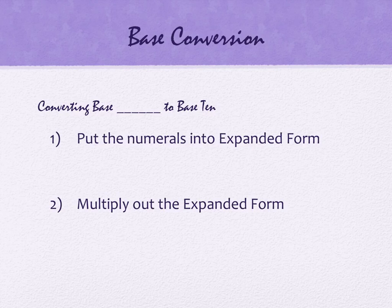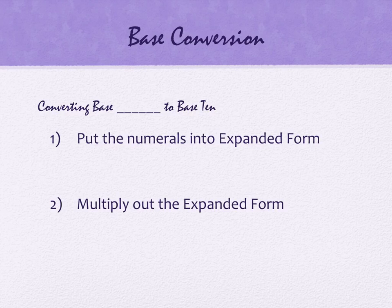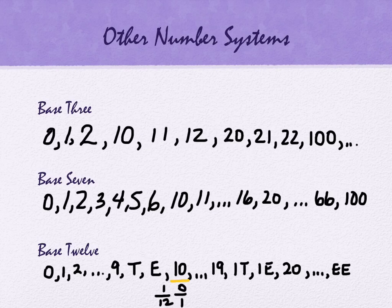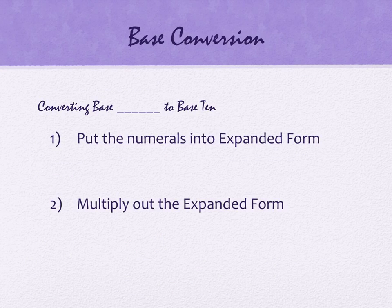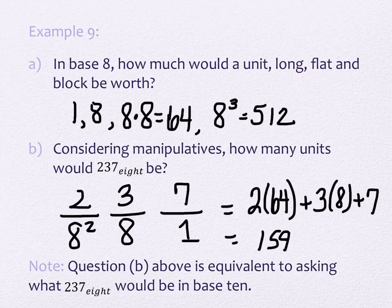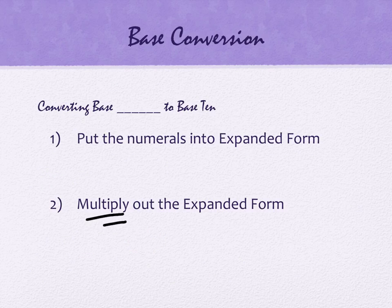What we're going to talk about now is converting between base systems — specifically, converting base blank into base 10. That's any other base into our numeration system. That's what we were doing with 237 base 8: we took something in base 8 and turned it into base 10. The key word is that you multiply when you turn them into base 10. You put the numbers in expanded form — that's what we did with 237: 2 times 64, 3 times 8, and 7 times 1 — then you multiply them out.